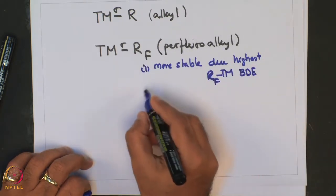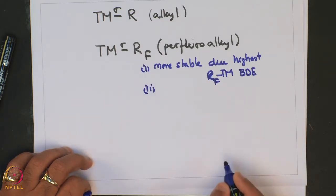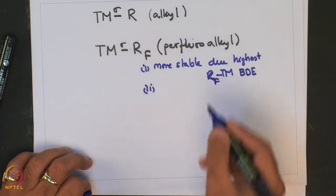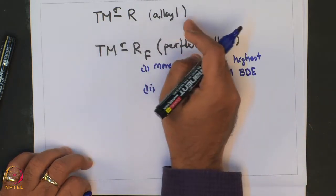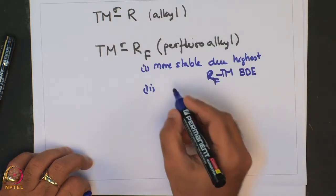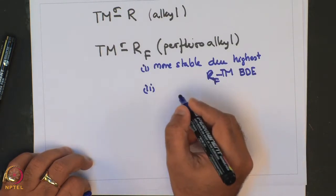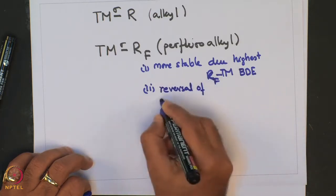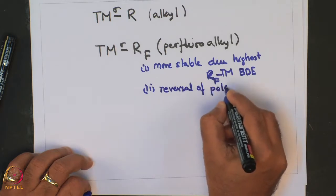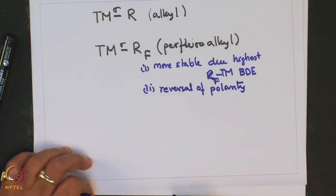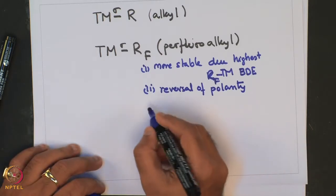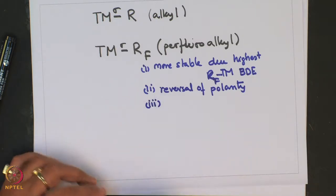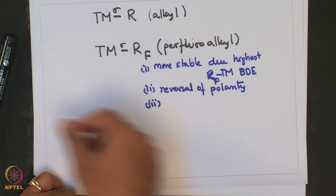We had also seen that these compounds show unique reactivity which are absent in their Transition Metal Sigma Alkyl counterpart. This arises due to reversal of polarity. We had also seen that of all the types of bond activations — for example, C-H bond activation or C-C bond activation —